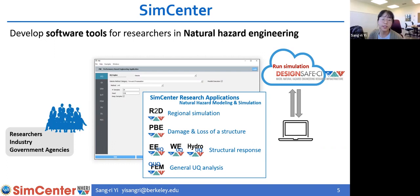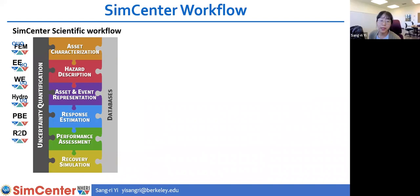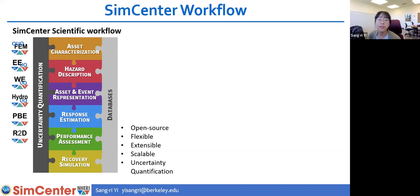The main users of our tools are researchers and also practitioners in industry and government agencies. All applications share the same workflow called the SimCenter scientific workflow. Our backends are often represented as jigsaw puzzle pieces. For example, R2D requires all the components in the figure, while for EUQ, the relevant parts span from hazard description to response estimation. This scientific workflow is fully open source and since it is modularized, it is flexible, extensible, and scalable.